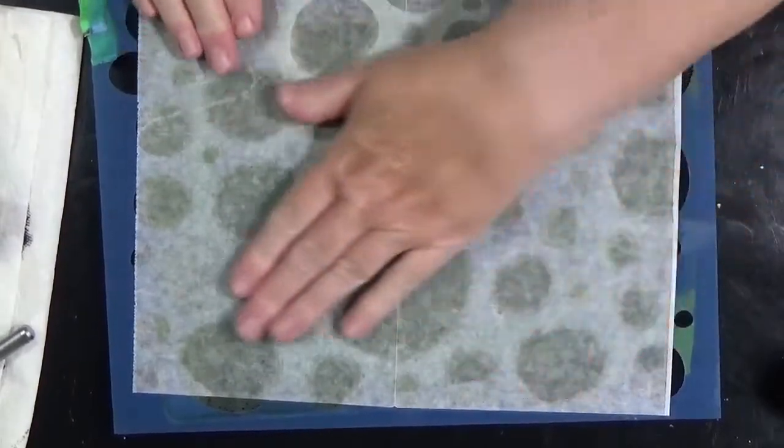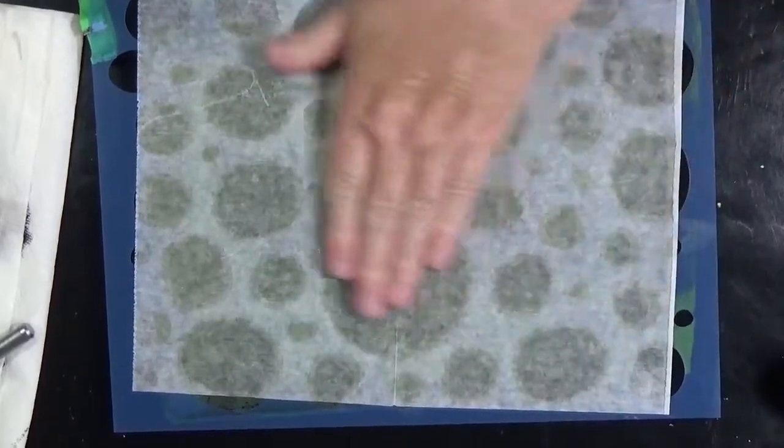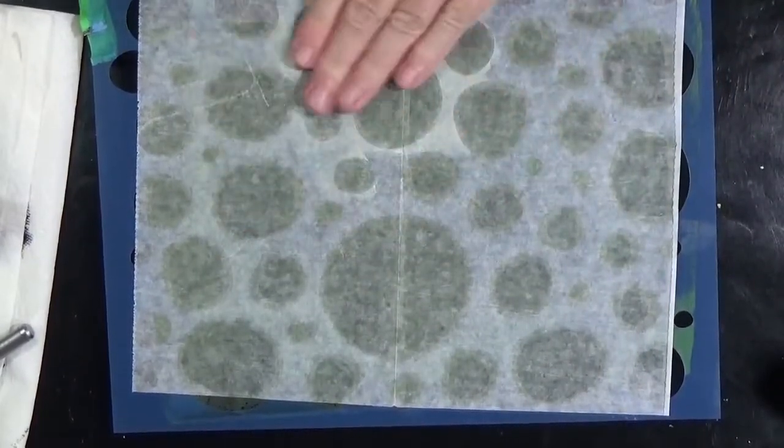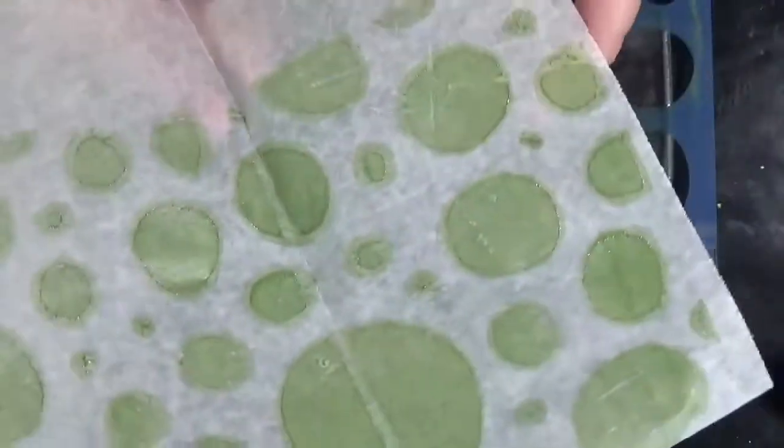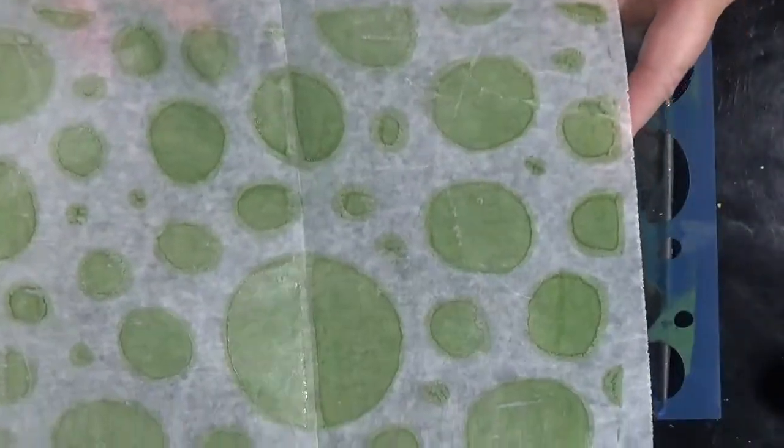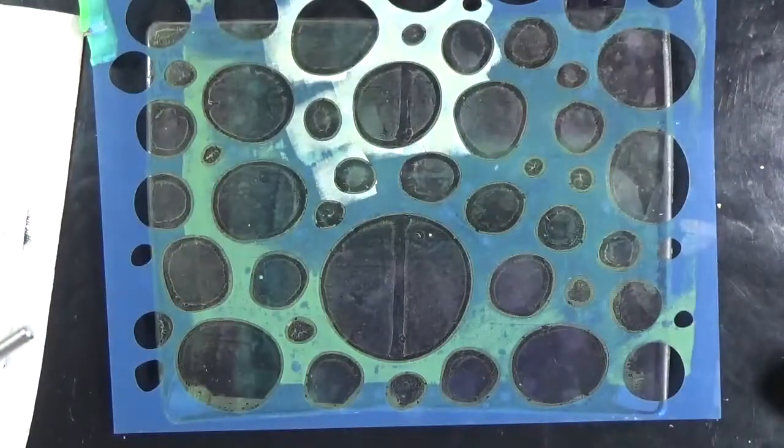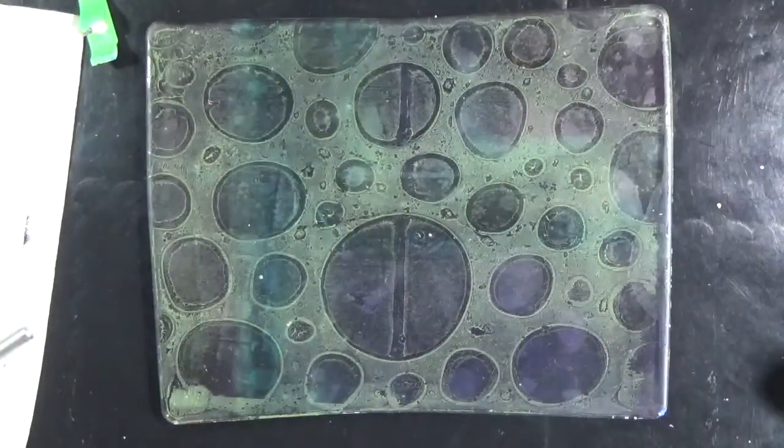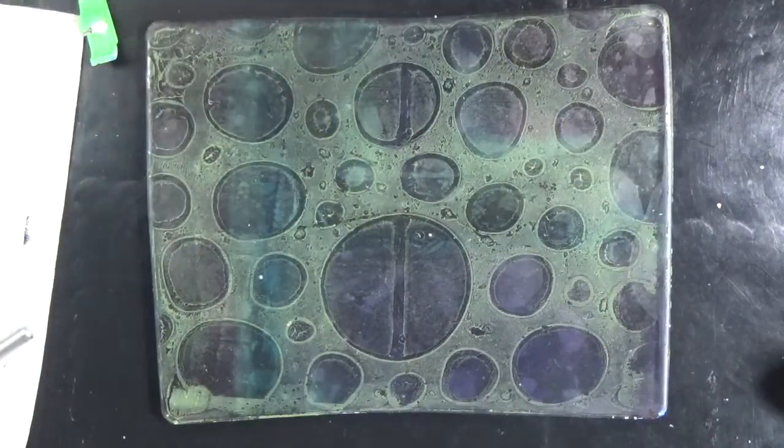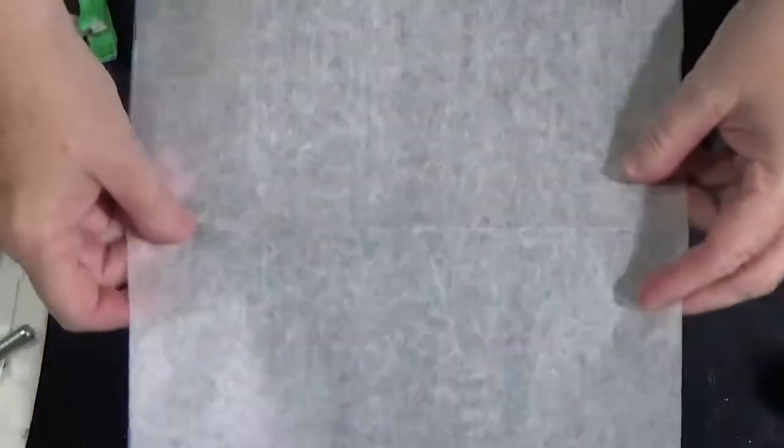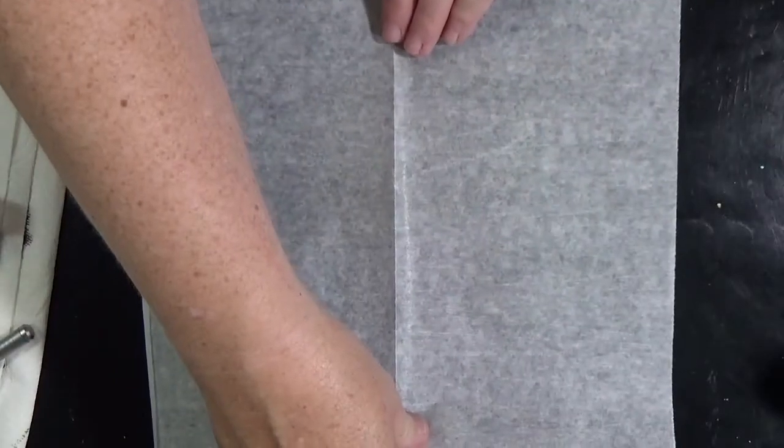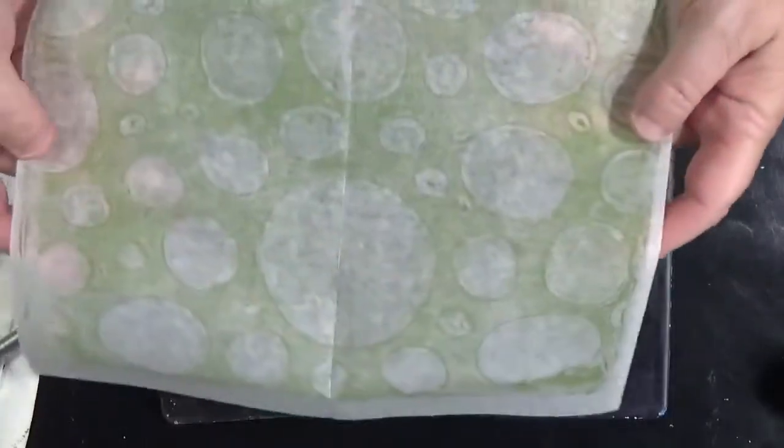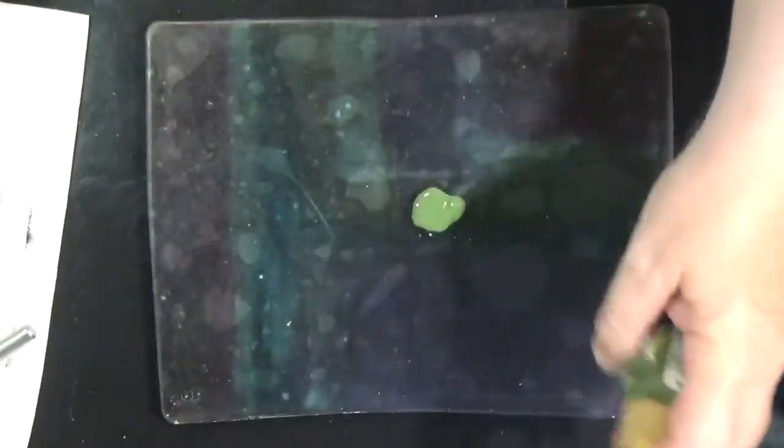However, there are lots and lots of stencils out there that are very similar to this. I think Lori Speltz has one. I know Stencil Girl has something similar. The Crafters Workshop probably has something very similar as well. You can find stencils that are very similar all around. I'm going to pick up the negative image using that avocado. And again, I just thought it was gorgeous.